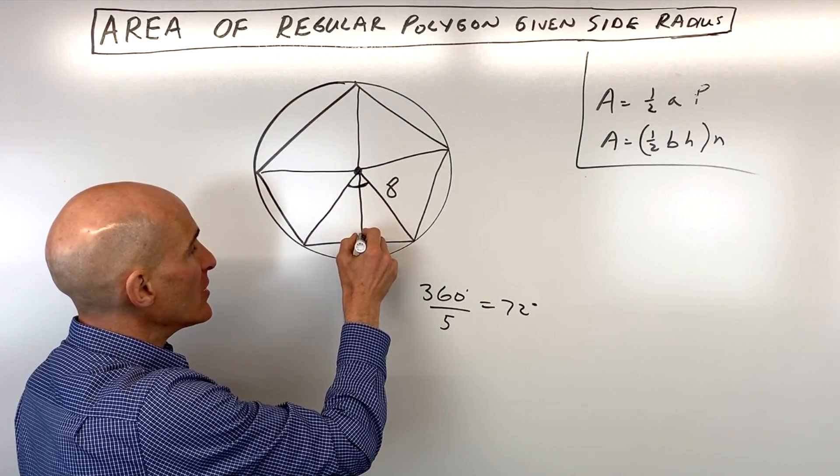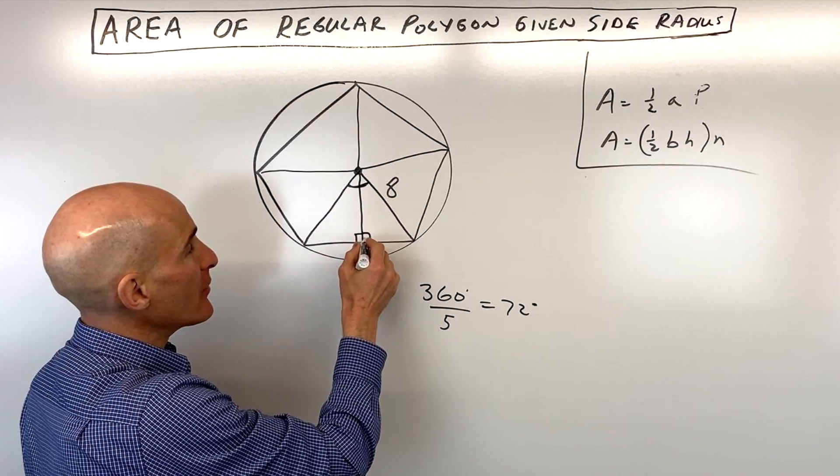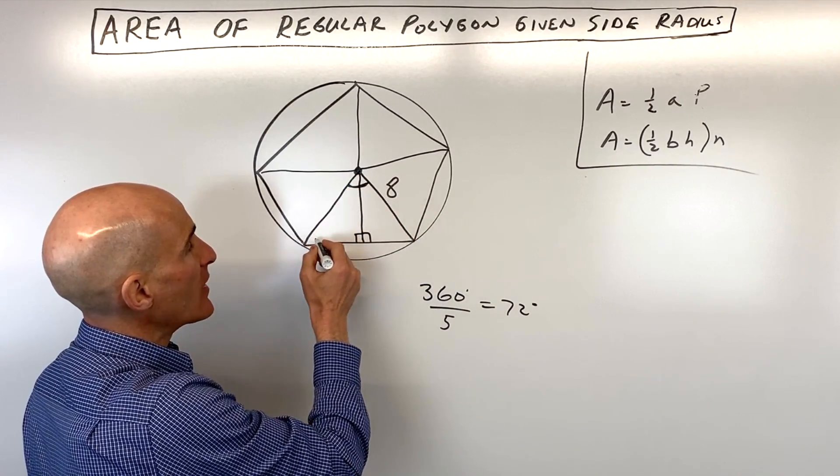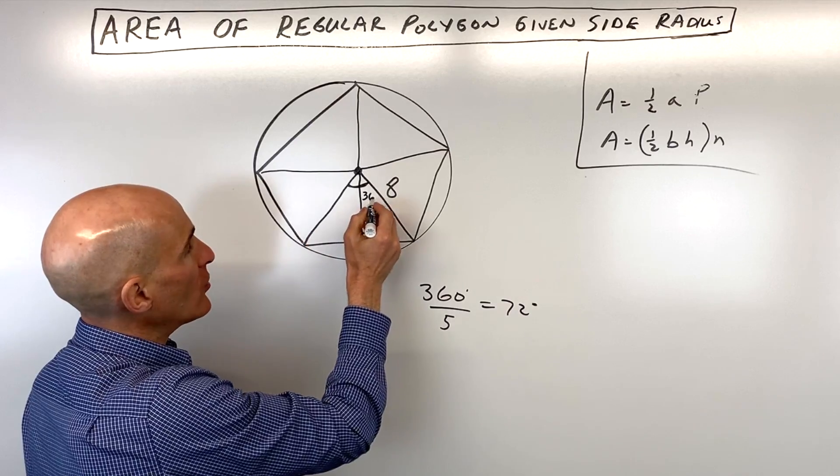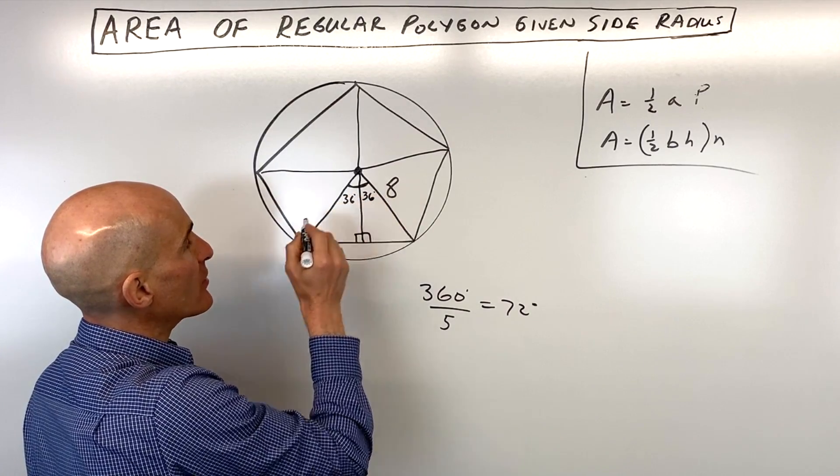But then if we drop an altitude here, which this is called the apothem, it's also the height of this triangle here, it's going to split that 72-degree angle into 36 and 36.